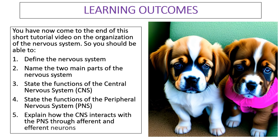Finally, you should be able to explain how the central nervous system interacts with the peripheral nervous system through afferent as well as efferent neurons. Thank you for watching.